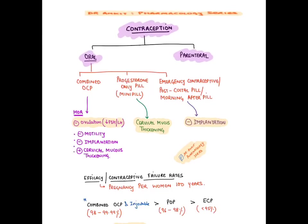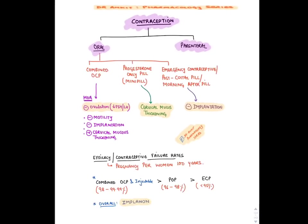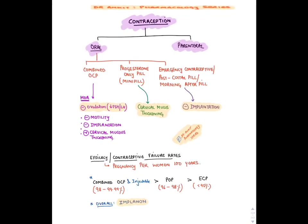Because combined OCPs inhibit ovulation, they are the most effective contraceptives. Efficacy is measured by contraceptive failure rate — the occurrence of pregnancy despite contraceptive use per 100 woman-years. The most effective contraceptive is combined OCP, followed by injectable/parenteral, then progesterone-only pill, then emergency contraceptive pill.